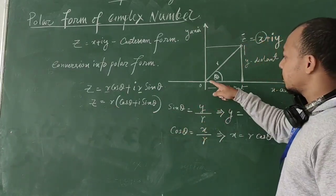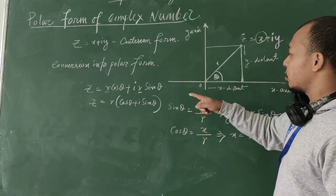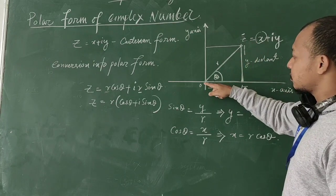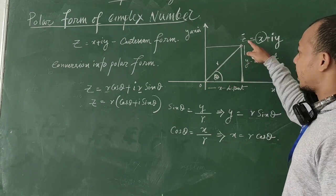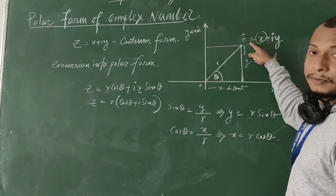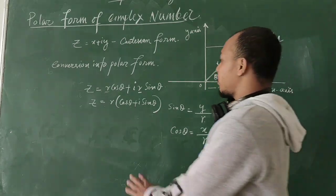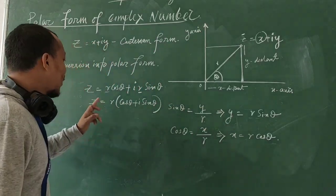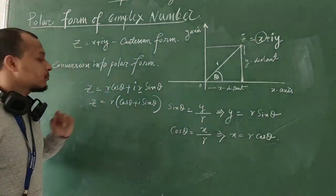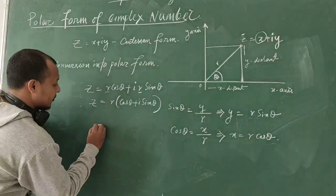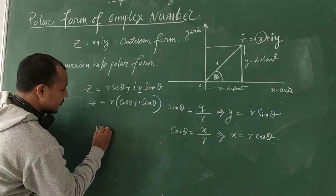R is the modulus of Z, meaning it is the distance from the origin to Z. Now we are going to find what R is.